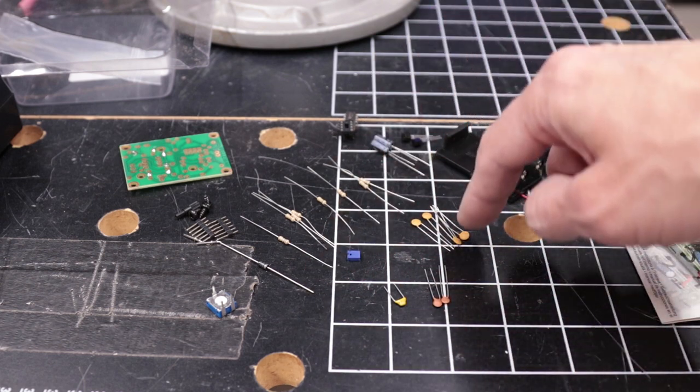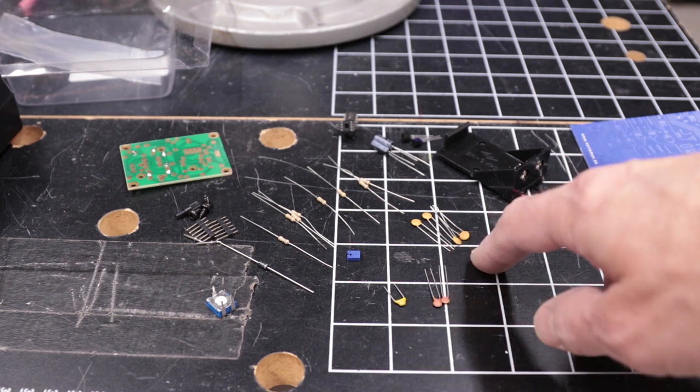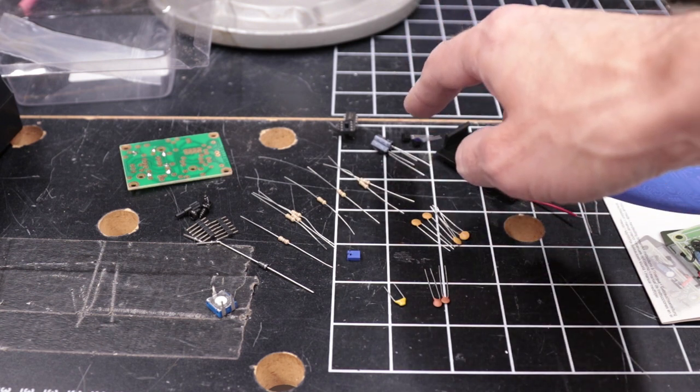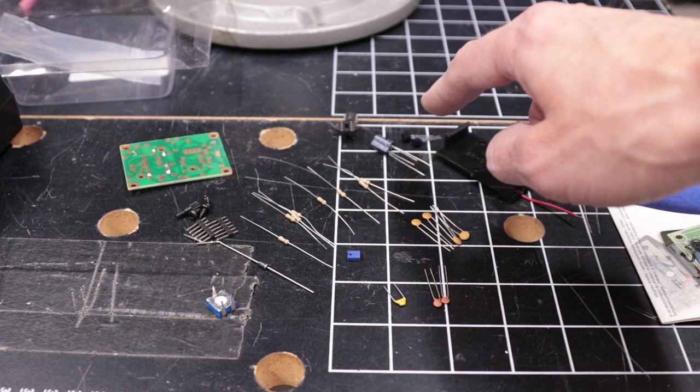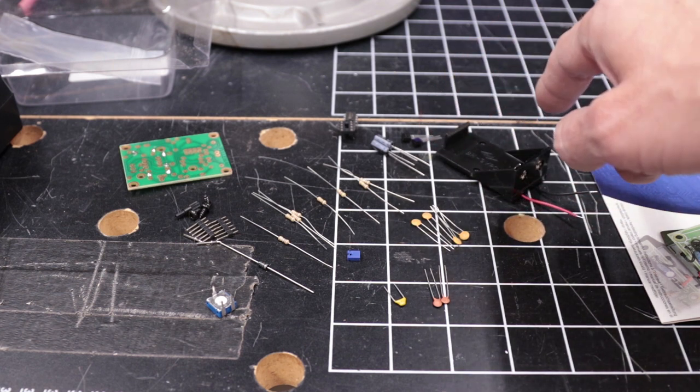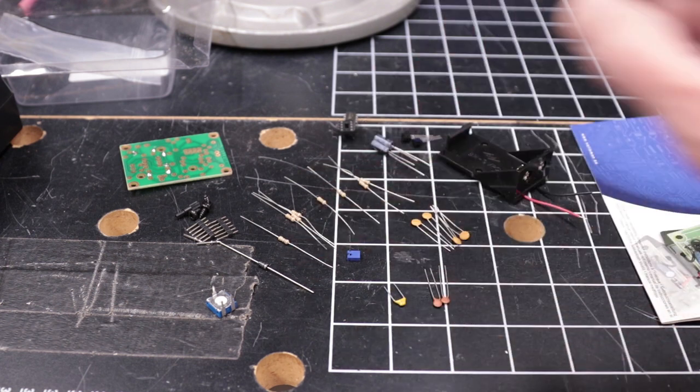So when we're putting in capacitors, we need to make sure that we get these in the right places because they do have different values on them, along with the resistors. The electrolytic capacitors, we need to pay attention to their polarity, but it's the same value for both of them. And the same thing goes for the transistors and diode.